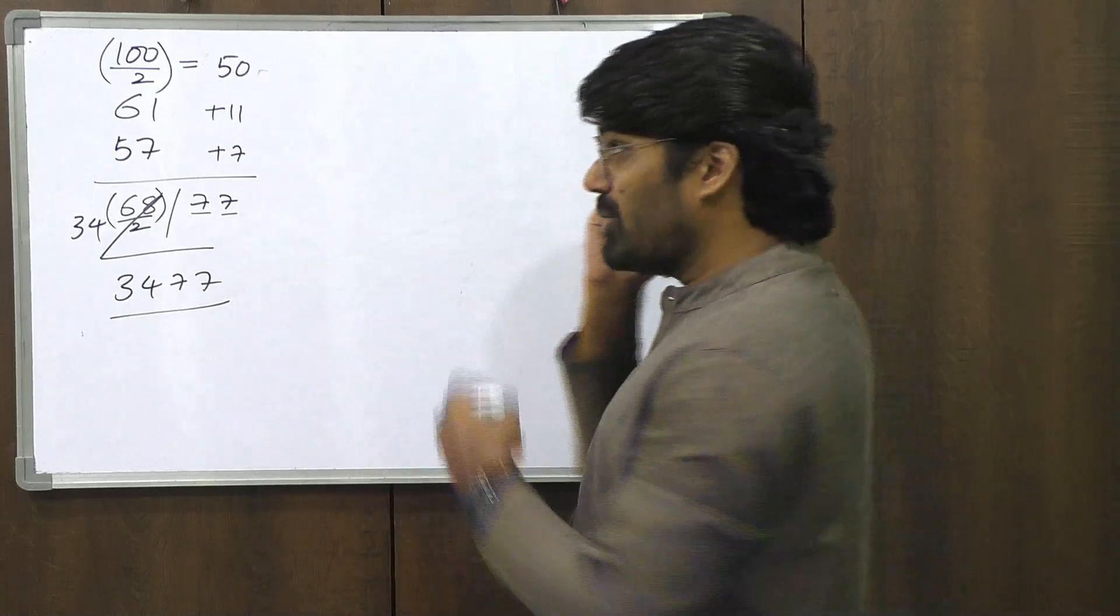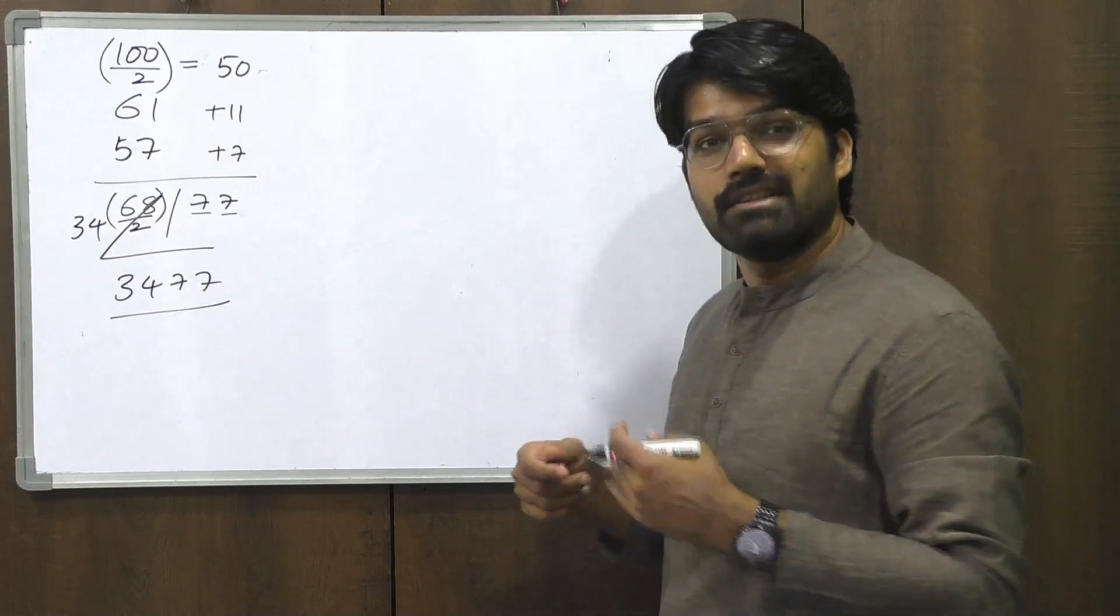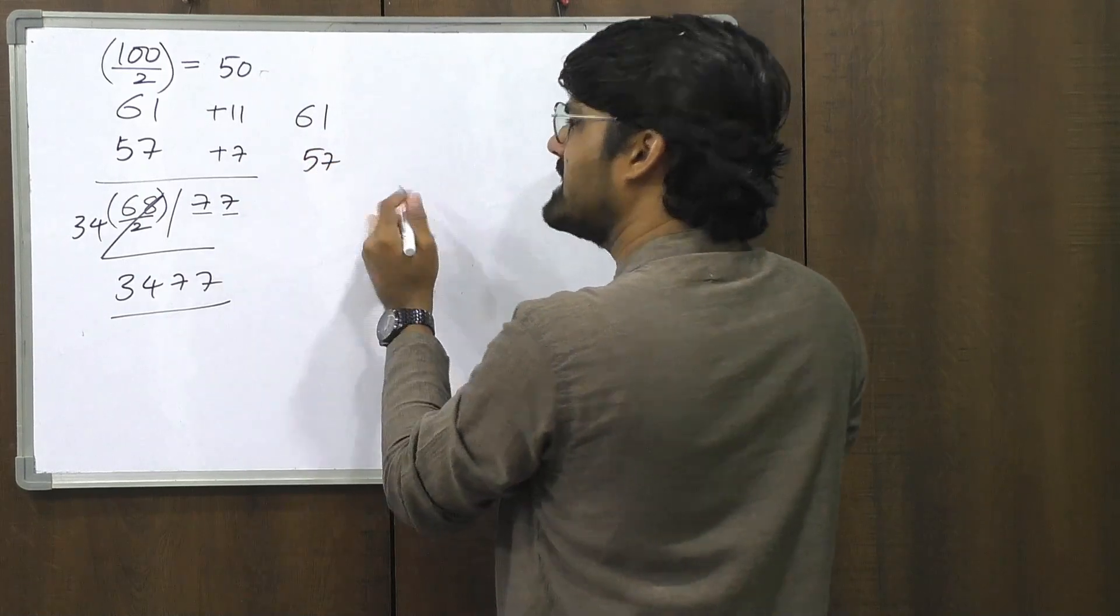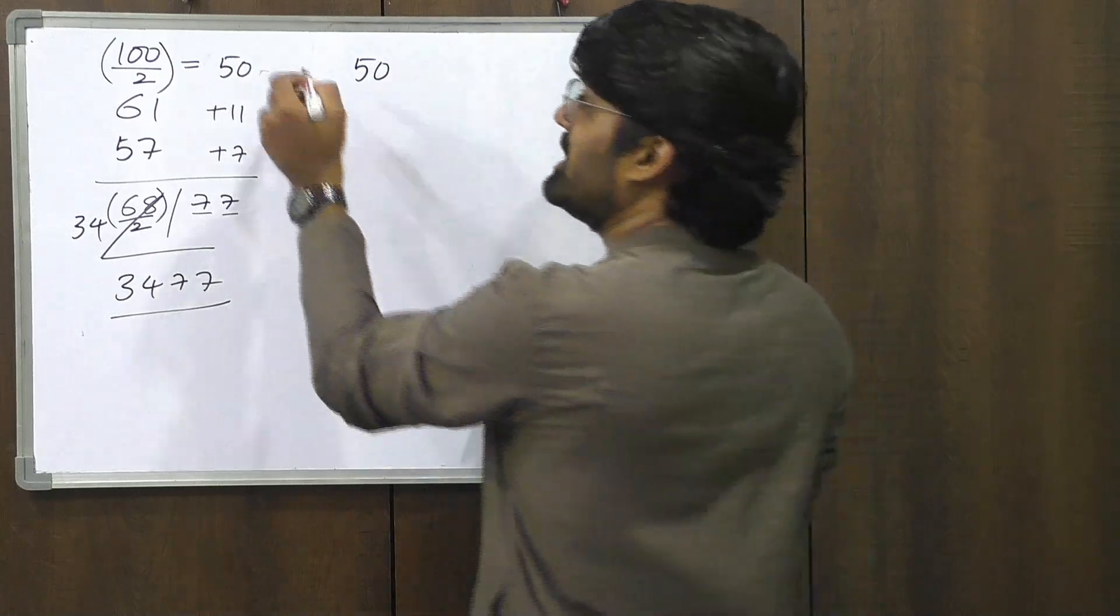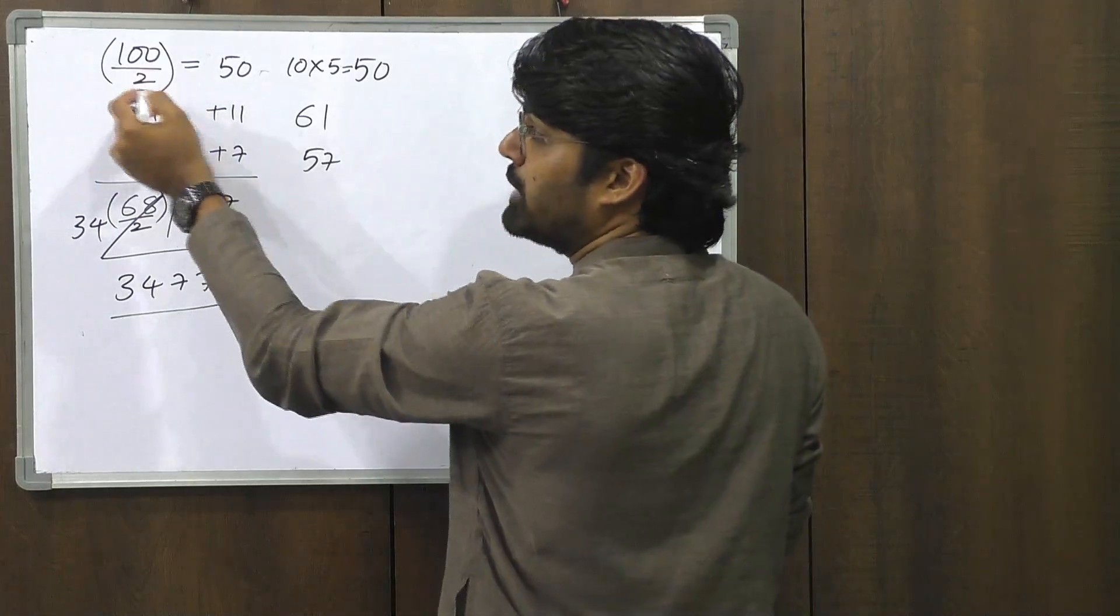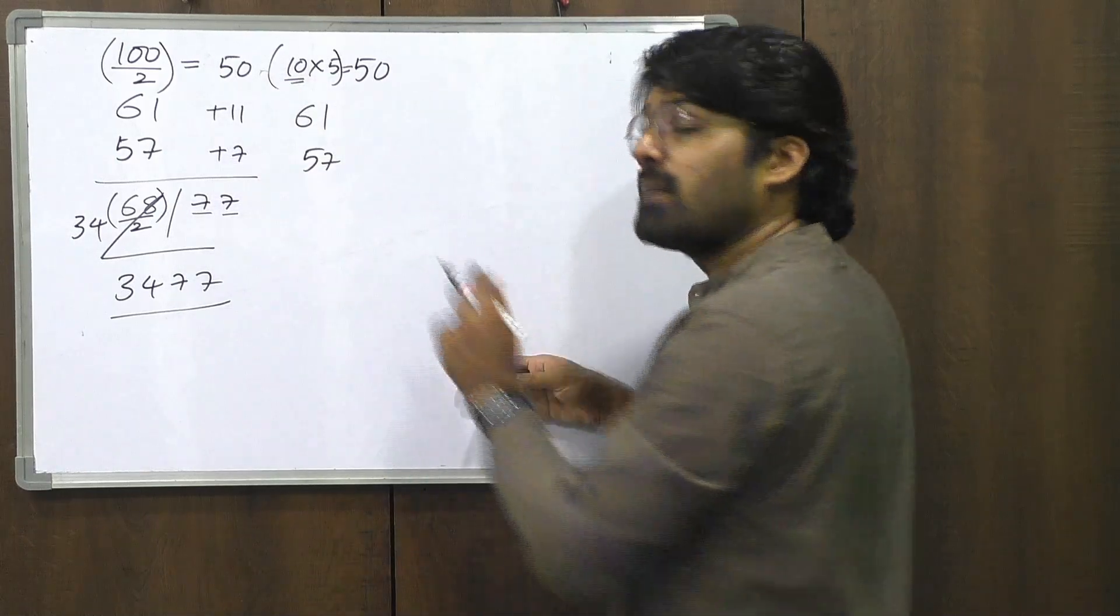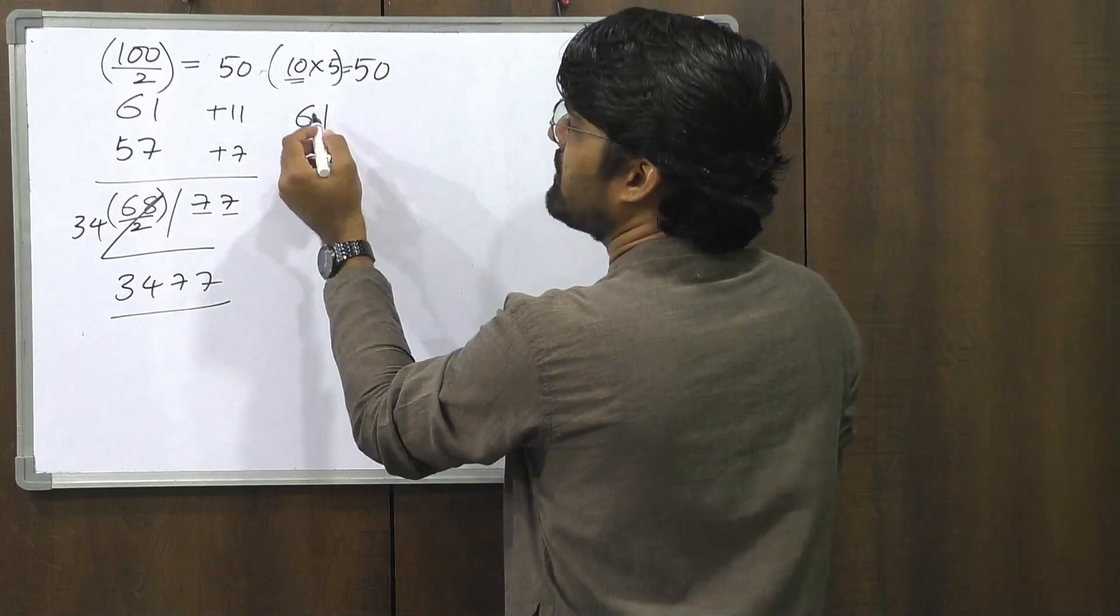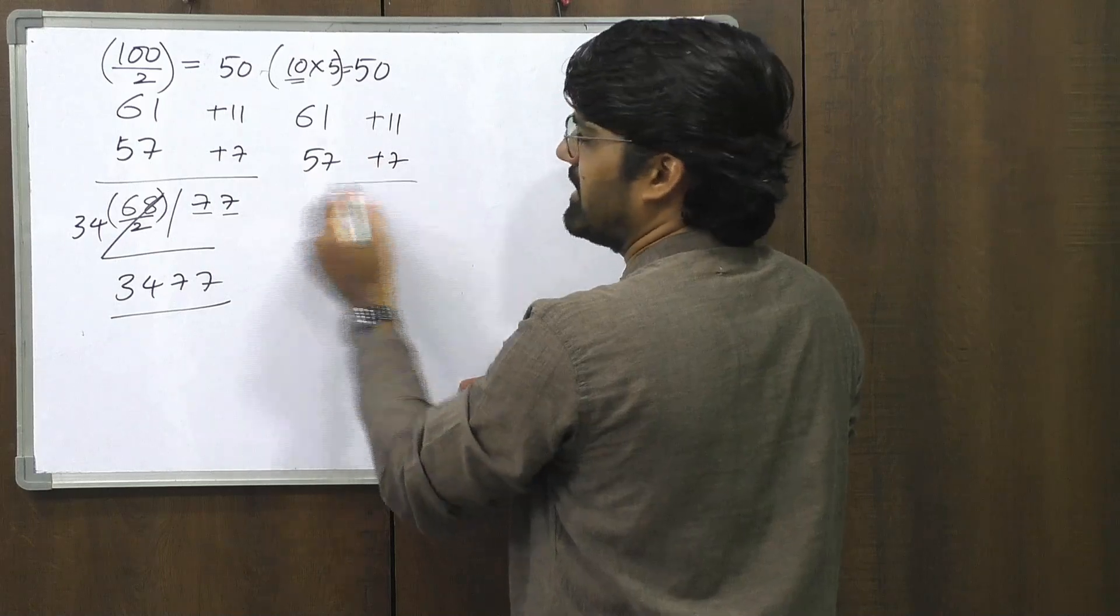But then is this the only way to do it? No. Let's try it one more time with a different working base. So I'll take the same numbers 61 and 57. Let's again consider the base to be 50, the working base to be 50. But 50 can also be taken as 10 times 5. 10 into 5 is 50. Like 100 by 2, 100 by 2 was 50. 10 into 5 is 50. So if you start with the original base of 10, multiply that by 5, you get 50. And proceed with the same process. So this time what happens? 50 plus 11 is 61. 50 plus 7 is 57. So that remains the same.